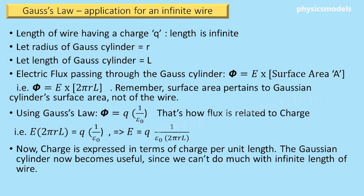The surface area of a cylinder is 2πRL. Now plug that into Gauss's law which says that flux equals Q times 1 over ε₀. Gauss's law is essentially saying that the flux coming out of the wire is proportional to the charge on the wire, which sounds logical.